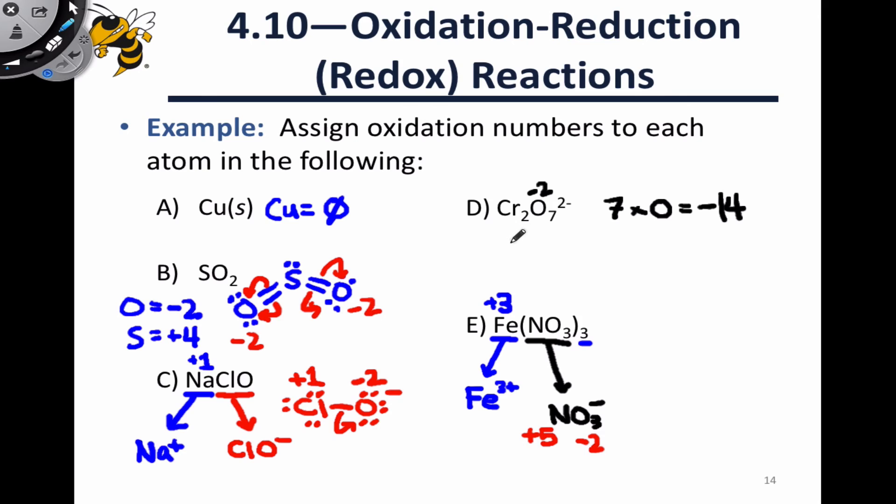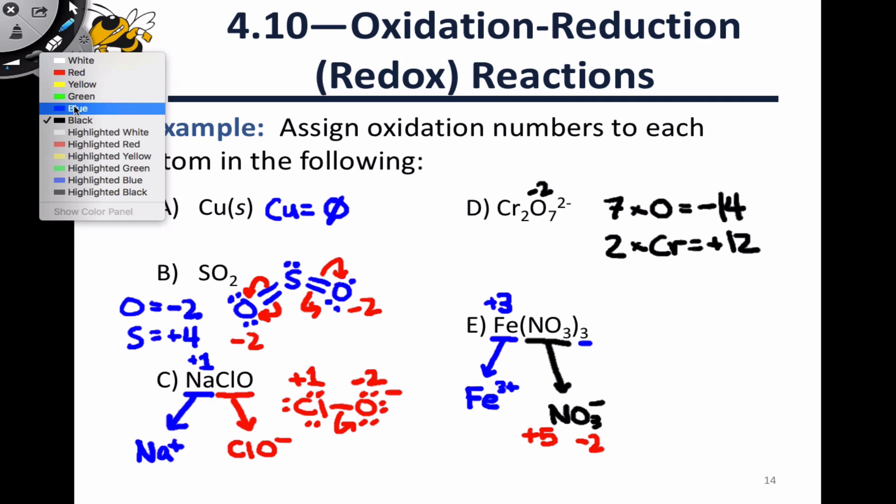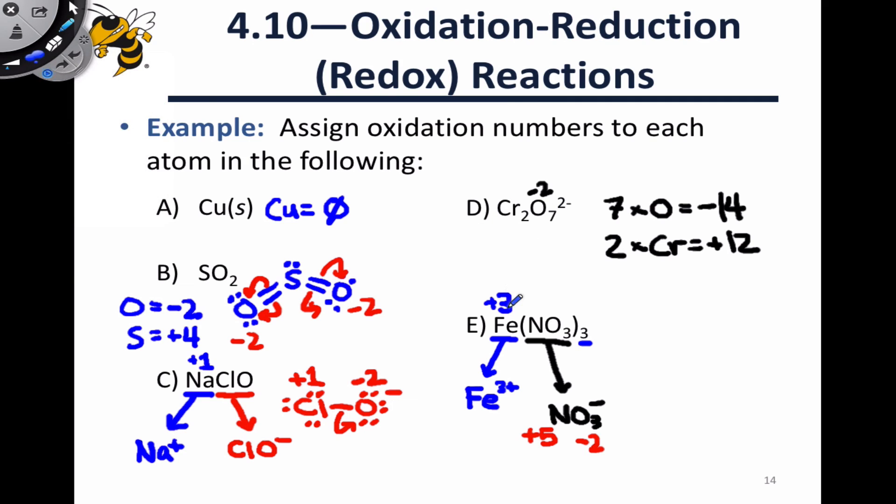That means the two chromium atoms must amount to plus twelve since the overall charge on the ion is minus two. Since we know that the two chromium atoms must amount to plus twelve, and we have no reason to believe that the chromium atoms will have different oxidation states, and this will be the case in all of the ions you see, by the way. Unless there's a clear structural difference between the two metal atoms, we can assume that they have the same oxidation number. That means each of those chromiums is going to be plus six.